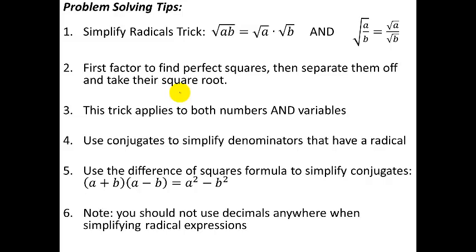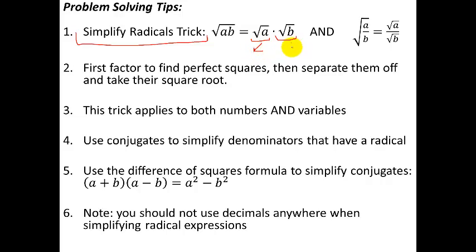There are a whole bunch of problem-solving tips and we'll do lots of examples. In order to simplify radicals, the trick you want to use is: if you have a square root of two things multiplied together, you can break it apart as two separate square roots and simplify each separately. Likewise, with a square root of a fraction, you can break apart the numerator and denominator separately. These are the two tricks you're going to use most of all when simplifying radicals.